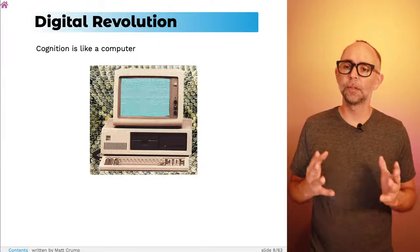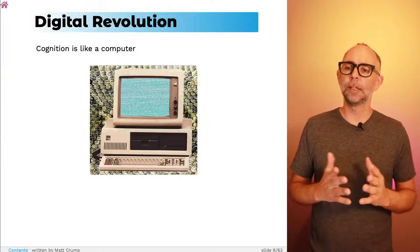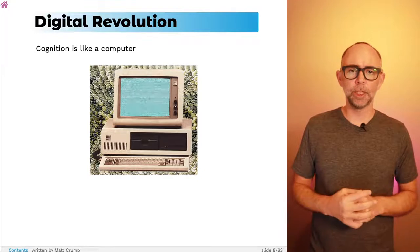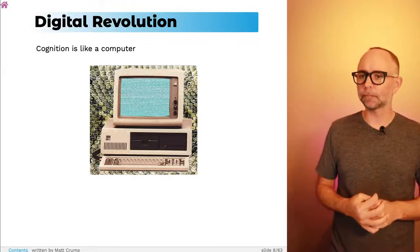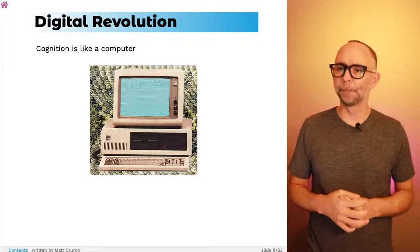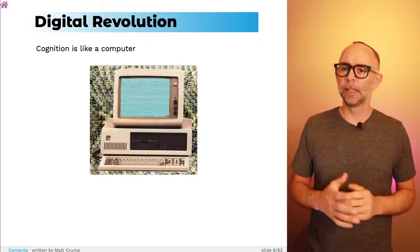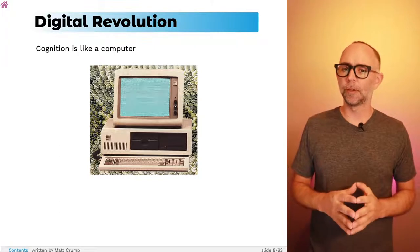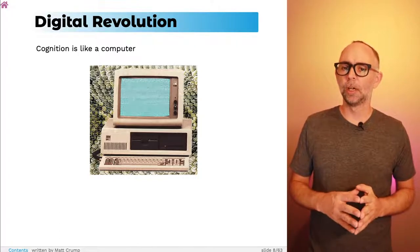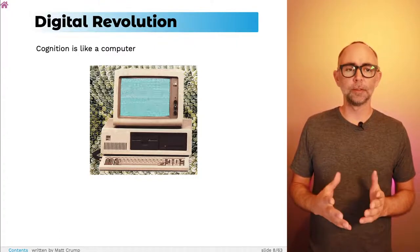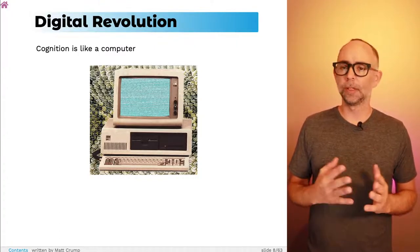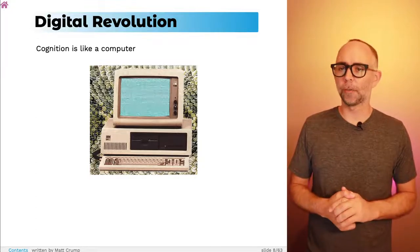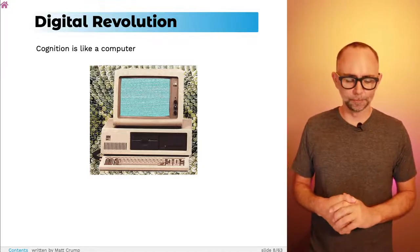Finally, as we move into the digital revolution in society, we see theories of cognition proposing that cognitive processes operate like a computer. A computer is a pretty advanced information processing machine. This metaphor — that cognition is like a computer — is still very much alive and well today, and it's probably the dominant way of thinking about how cognitive processing works.